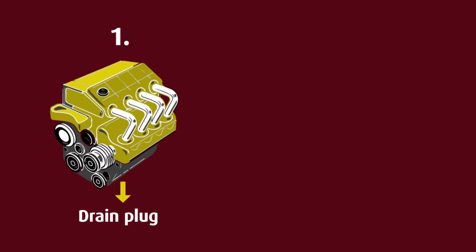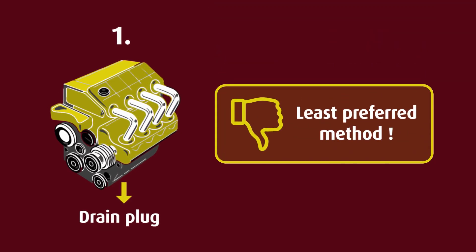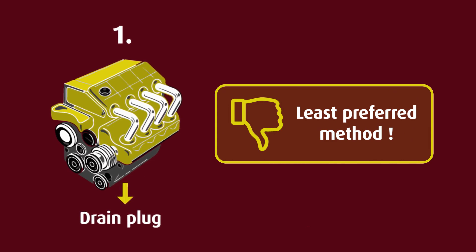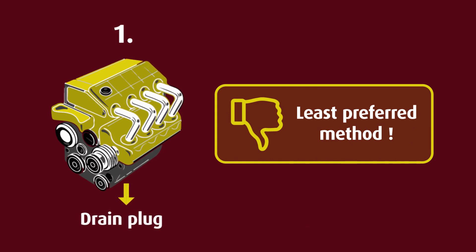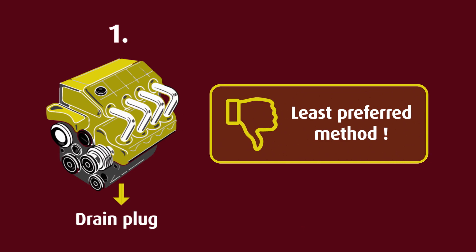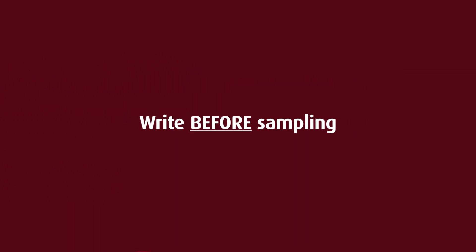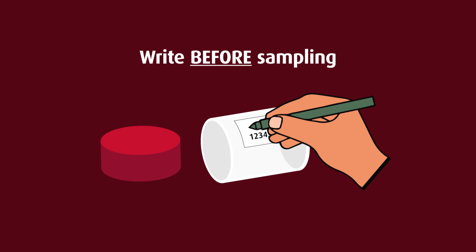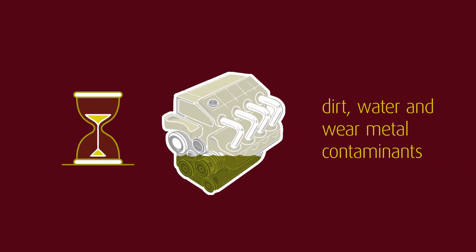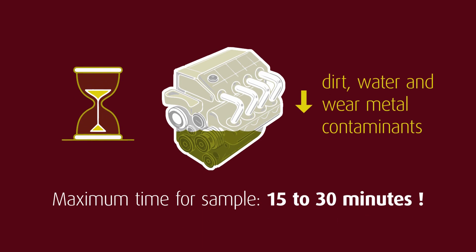Drain plug sampling is the least preferred method, as there is a good chance that dirt and debris, either around the outside of the plug or at the bottom of the sump, may find its way into the bottle, making results appear worse than they actually are. To take a good drain sample, you need a strong brush with plastic or metal bristles, a rag, and a clean white paper towel. It's also a good idea to write whatever information you need on the bottle label before you start, as once the label has oil on it, it becomes almost impossible to write on. A key issue with drain plug sampling is the limited window of time to extract the sample after shutdown. Once a component is shut down, dirt, water, and wet metal contaminants start to sink to the bottom of the sump. Studies have shown that the maximum time to get an excellent sample varies from 15 to 30 minutes after shutdown.